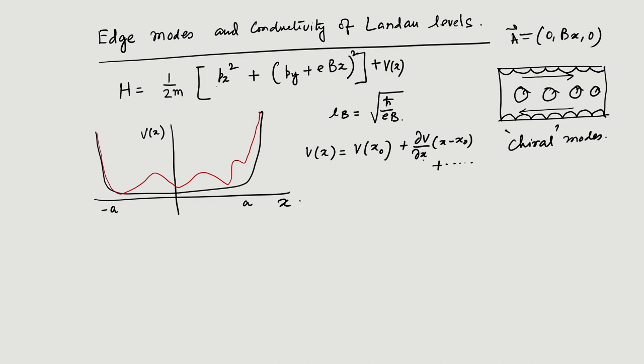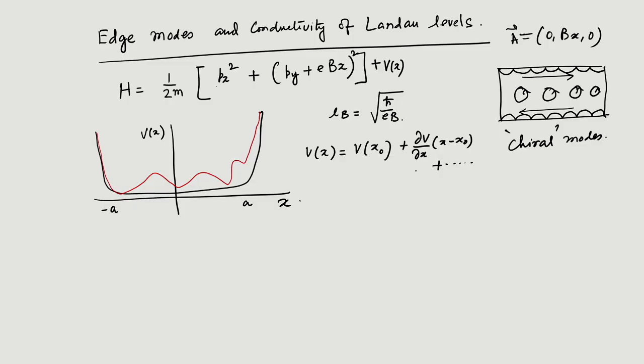The first term V(X_0) is a constant that does not affect us much. The gradient term looks like a potential due to an electric field. Because of this term, the particle acquires a drift velocity in the Y direction: V_y = -(1/eB) * (dV/dX).